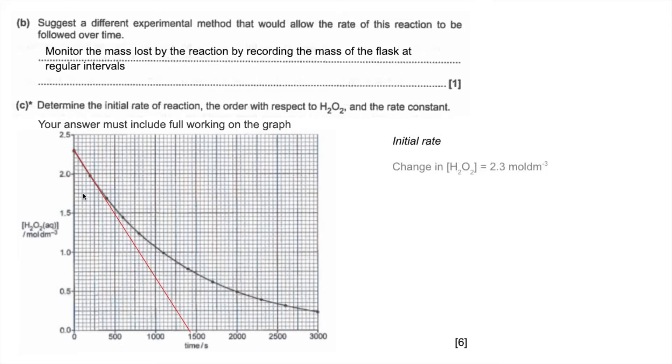So the initial rate, the change in hydrogen peroxide concentration, change in y, I'm getting 2.3 moles per dm³. Change in time I'm getting 1400 seconds. So my rate came out at 1.64 × 10⁻³ moles per dm³ per second. And the range allowed was those. So hopefully you've got somewhere between those two sets of numbers.